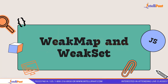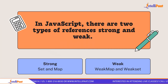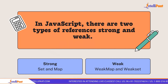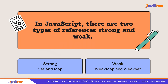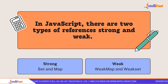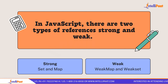In JavaScript we have two types of references: strong and weak. References are basically like pointers — similar to pointers in C++, but in JavaScript we call them references. Under strong references we have Set and Map, which we already know about. Under weak references we have WeakMap and WeakSet.